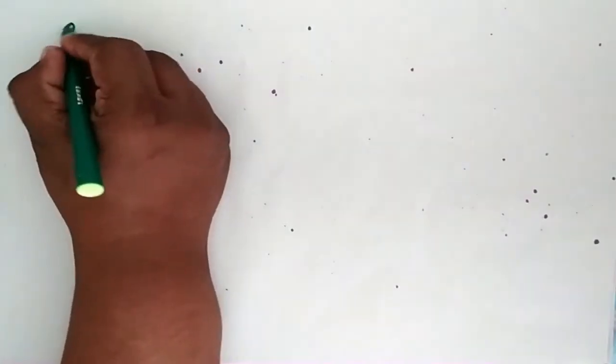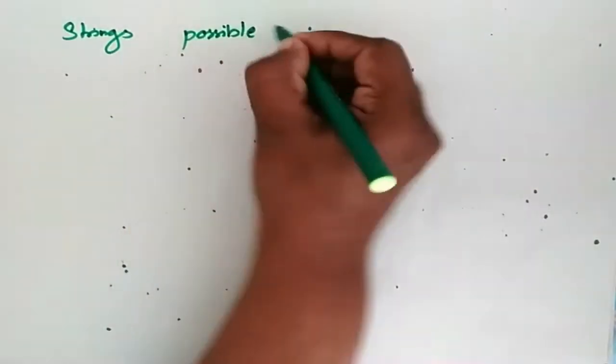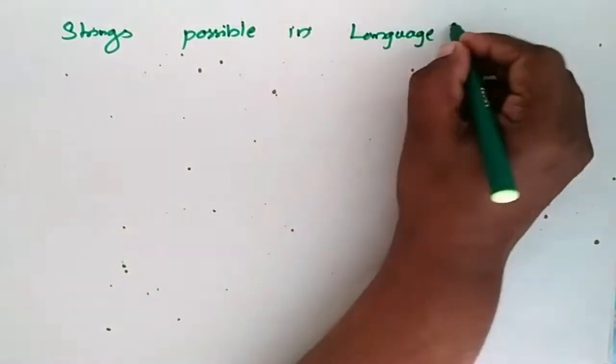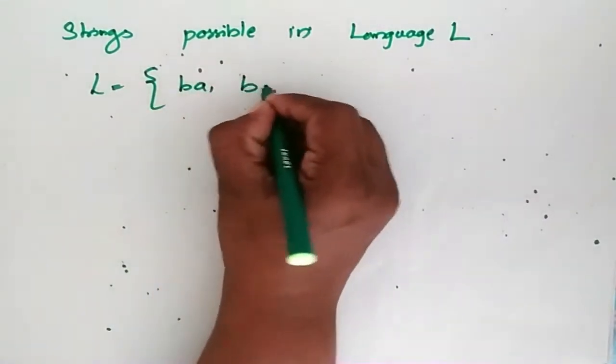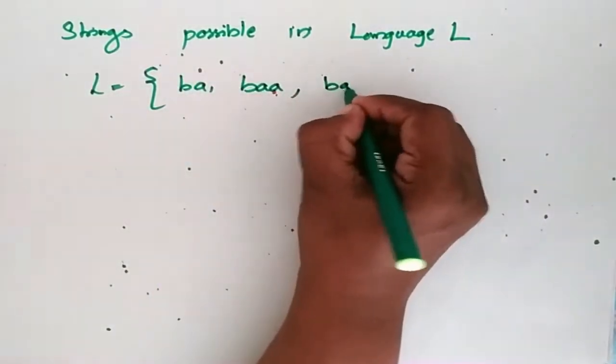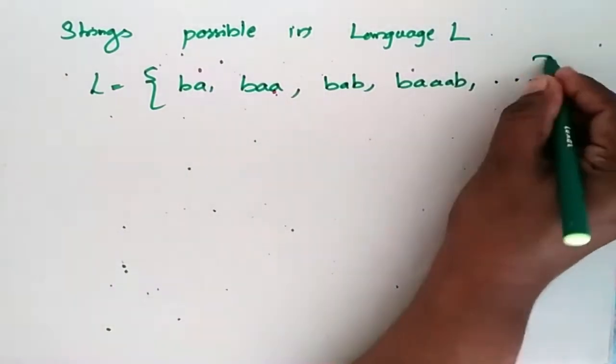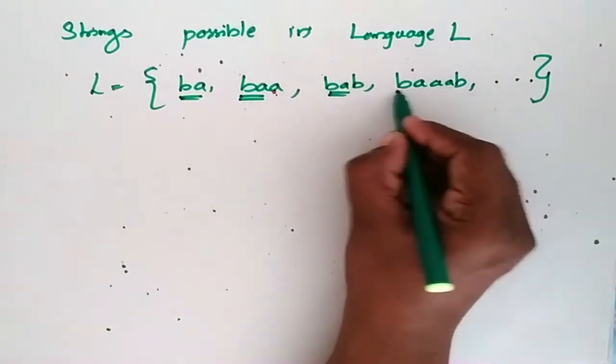Now strings possible in language L. So L equals BA, BAA, BAB, BAAB, etc. It goes on like this but it should all begin with BA, substring BA.